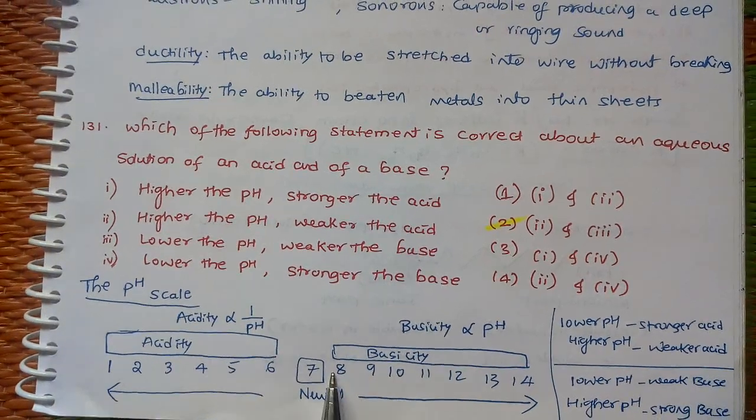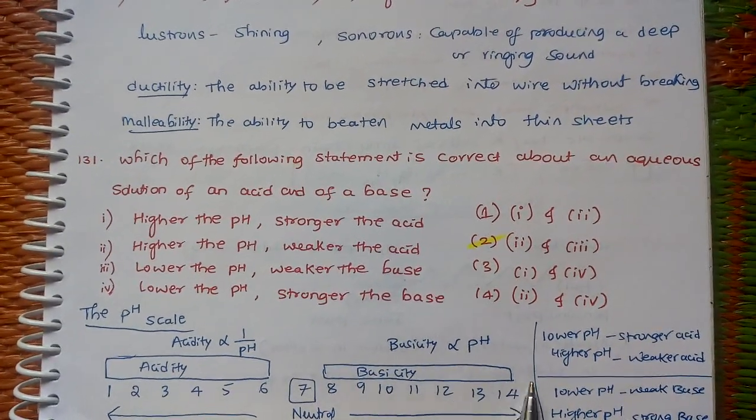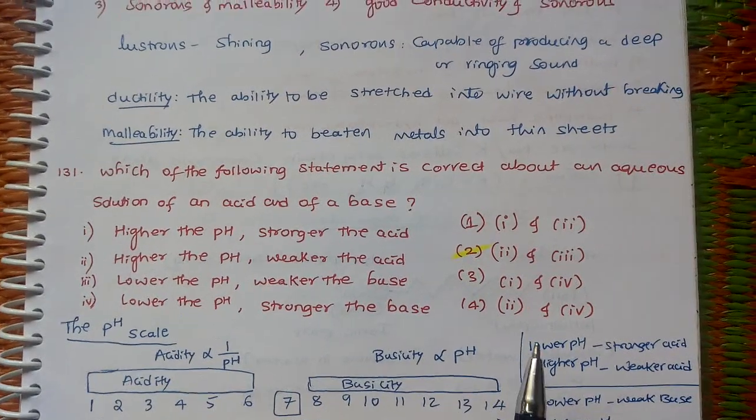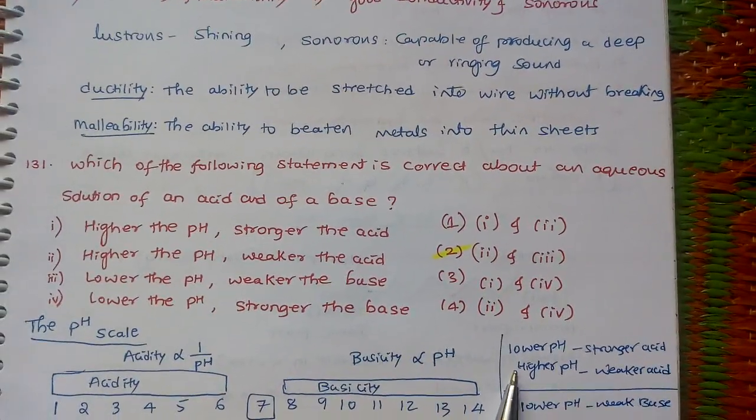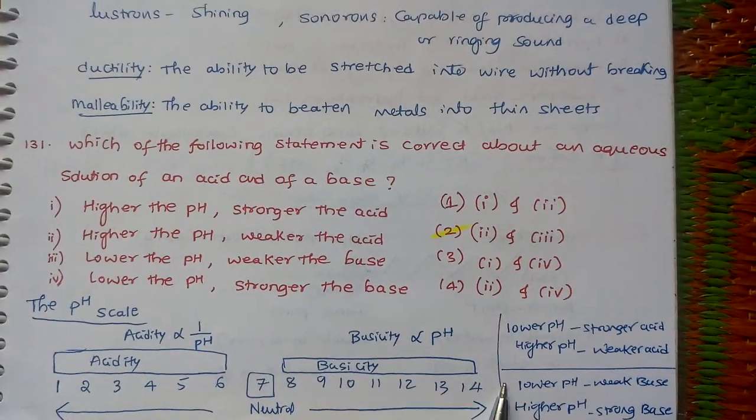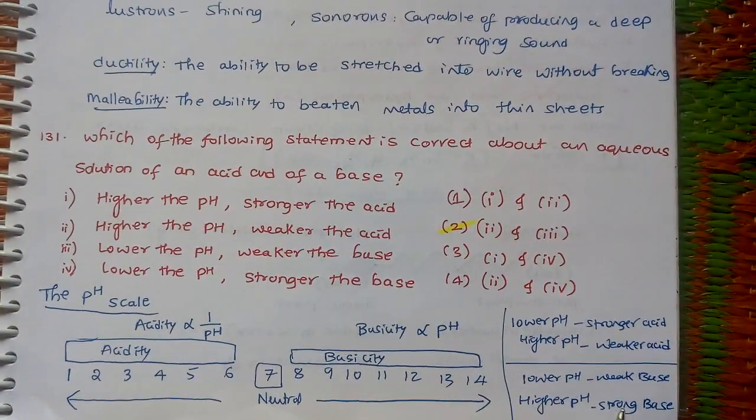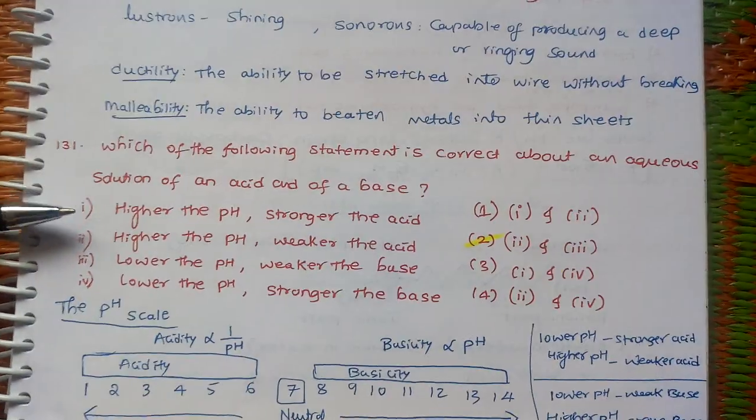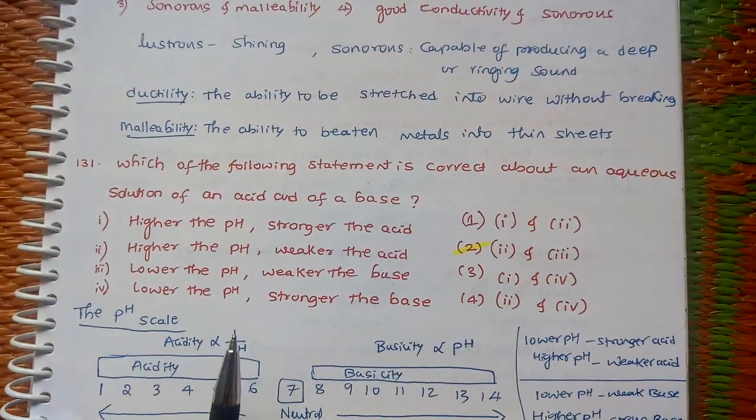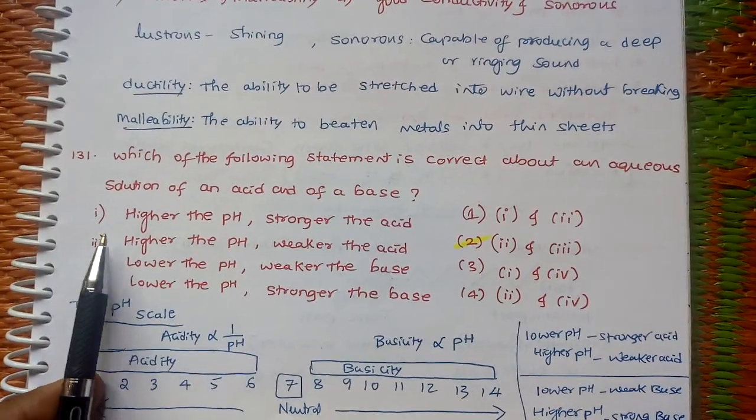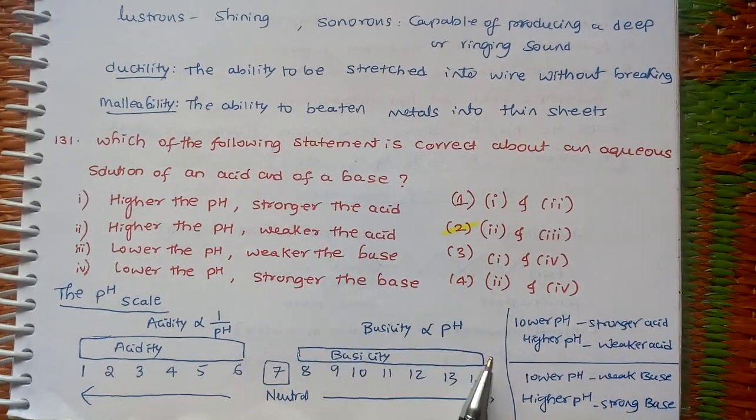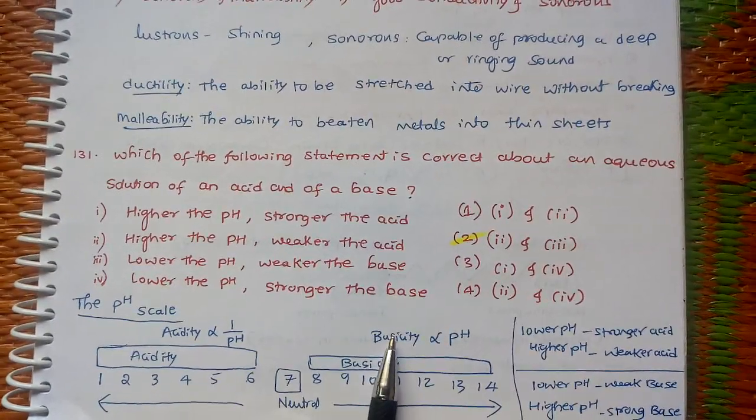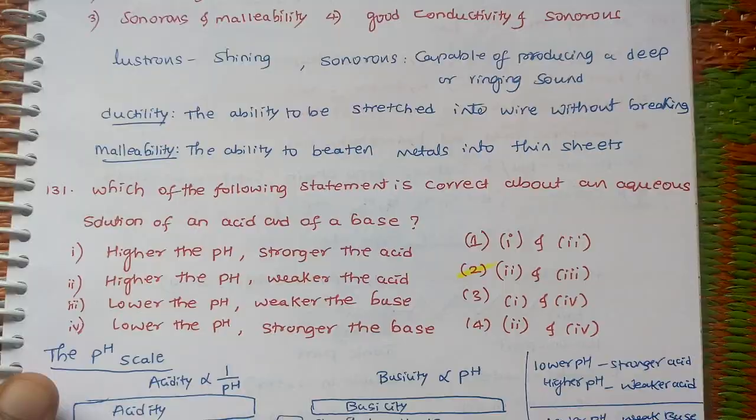From this diagram, acidity is inversely proportional to pH. Basicity is directly proportional to pH. That means lower pH means stronger acid, higher pH means weaker acid. For base, lower pH means weak base, higher pH means strong base. From this we understand: higher the pH, weaker the acid - option 2 is right. Similarly option 3: lower the pH, weaker the base. Yes, basicity is directly proportional to pH. If pH is less, basicity is also less. So options 2 and 3 are correct.